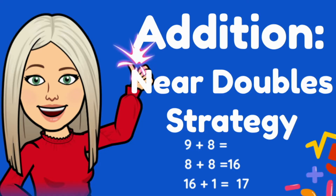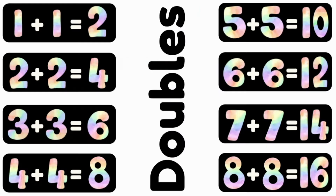Addition using the near double strategy. To use the near double strategy, you need to know what doubles are. Doubles are when you double a number or add it together with itself, like one plus one or two plus two, or three plus three, etc. You need to know these doubles facts off by heart in order to use the near double strategy.